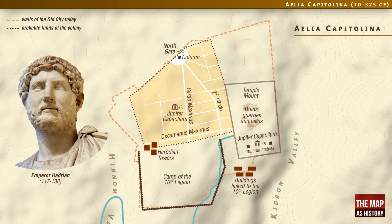According to the only known reference to monuments in Roman Aelia, found in a Byzantine chronicle, the city contained all the classical elements of Roman cities: baths, a circus, markets, commercial arcades, and even a theatre, though their exact position remains unknown.